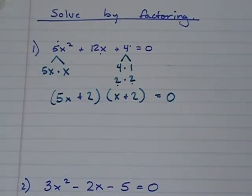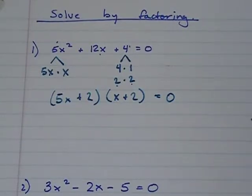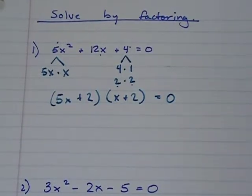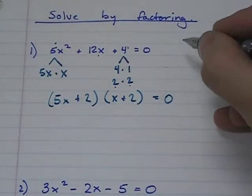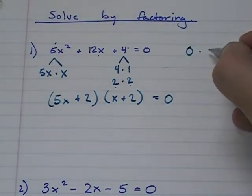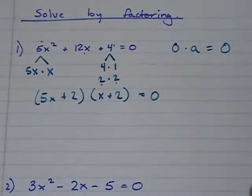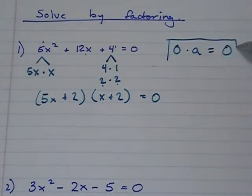And if the problem said to factor and stop we would be finished. But they didn't ask us to factor, they asked us to solve. There's a fun little property in mathematics called the zero property. And it basically states that zero times any number, zero times a equals zero.